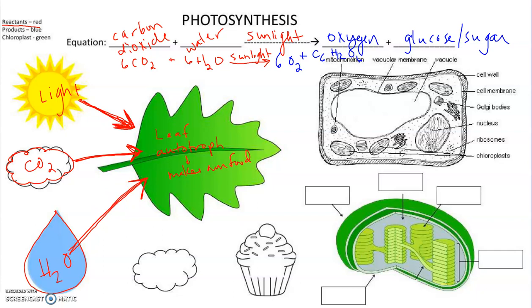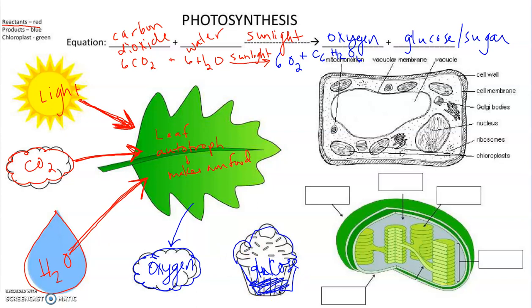Out of photosynthesis, we're going to get oxygen — making that in blue for our products — and then we'll get glucose, which is just my little cupcake over here. Once our plant cell or autotroph makes the oxygen and the glucose, something like the glucose is going to be consumed by a heterotroph, which is an organism that needs to eat food in order to survive. So that would be things like us — we are heterotrophs.